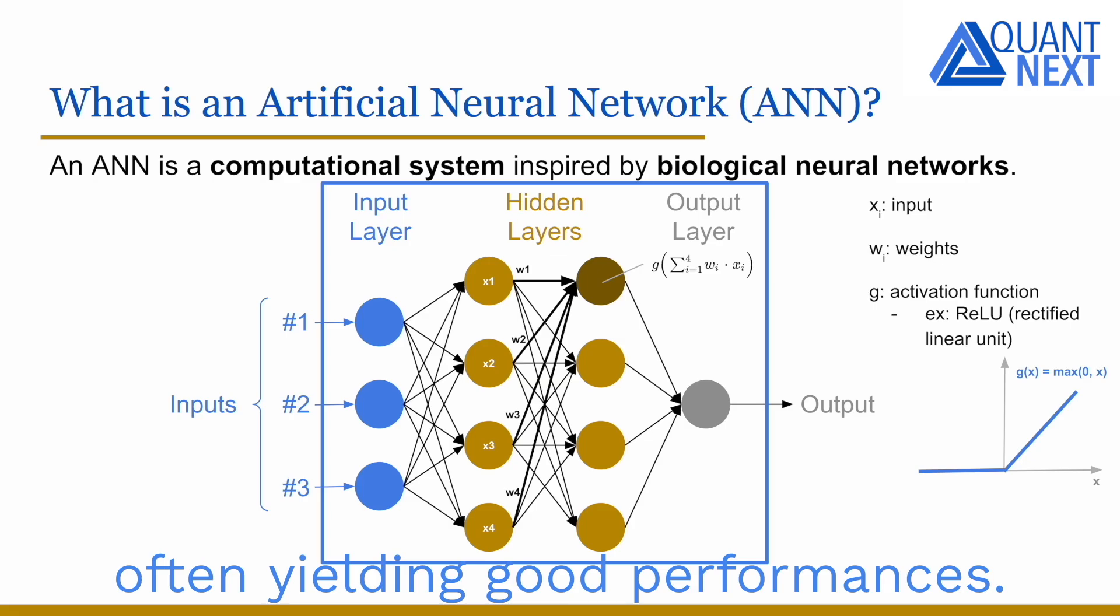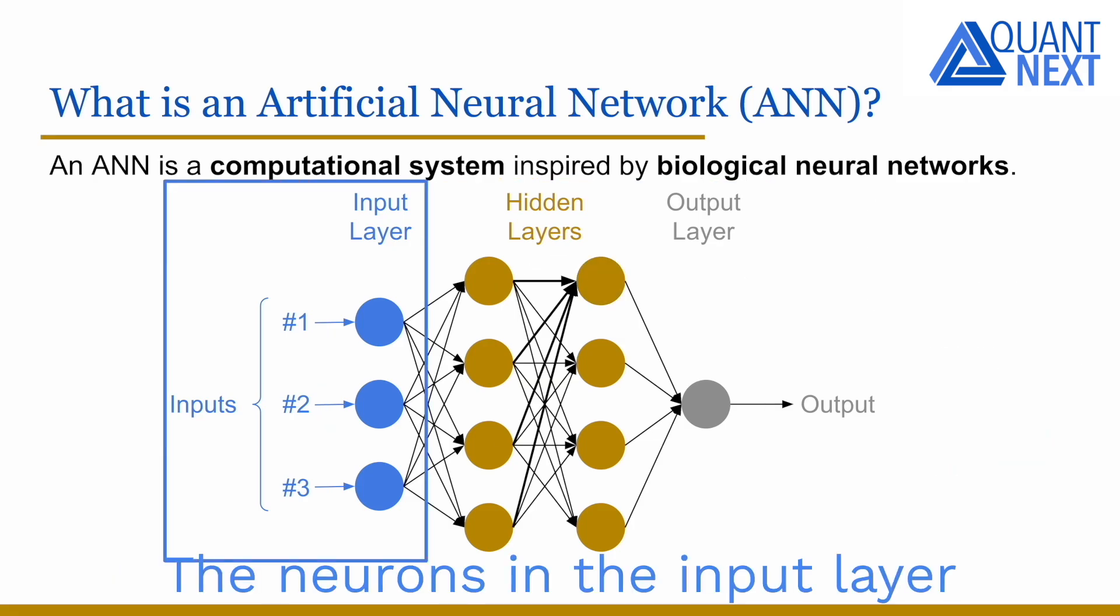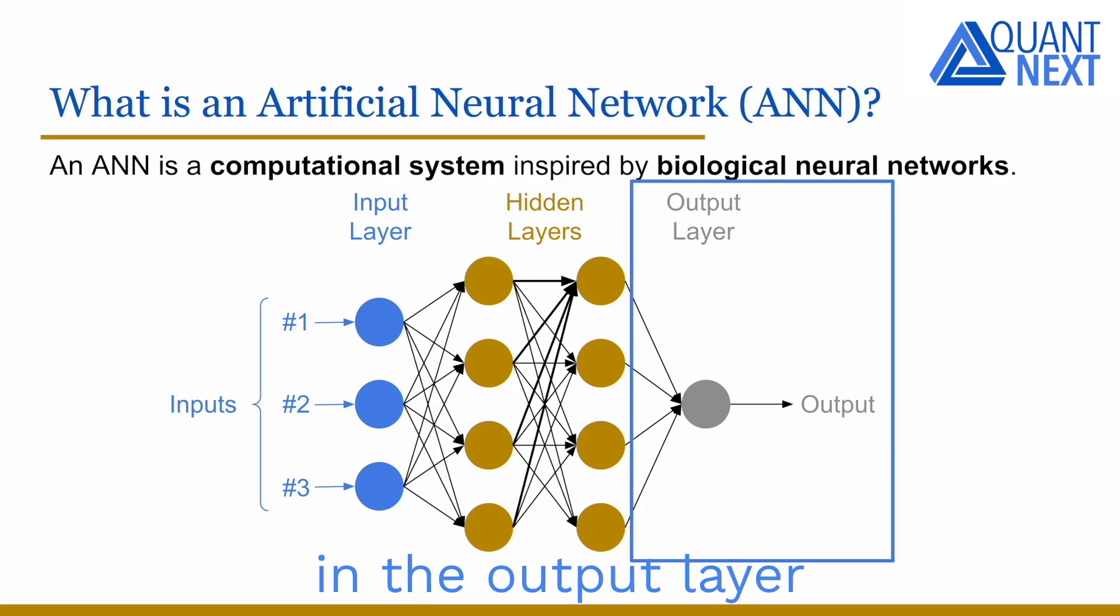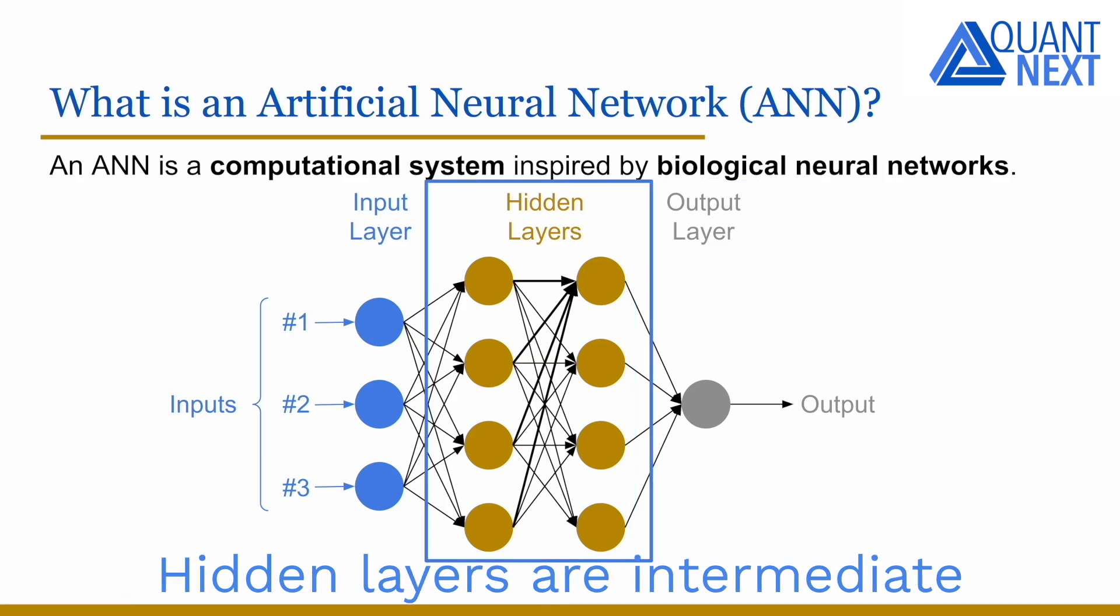The neurons in the input layer receive input signals from the external environment, while the neurons in the output layer produce the output of the model. Hidden layers are intermediate layers between input and output ones.